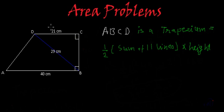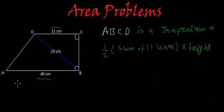We know the lengths of the parallel sides — one is 21 cm and the other is 40 cm. But we don't know the height. BC is the height, but we don't know its length.